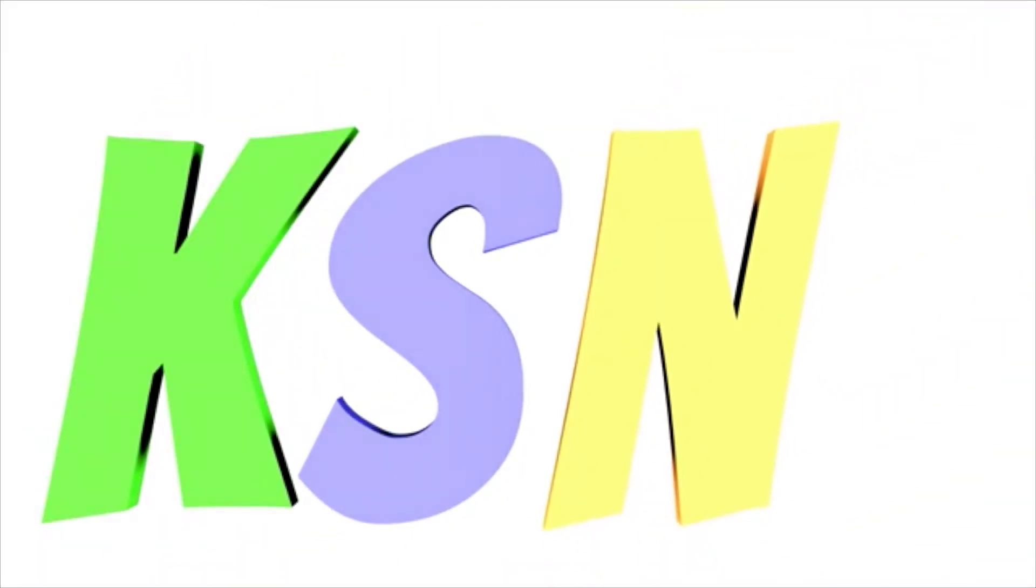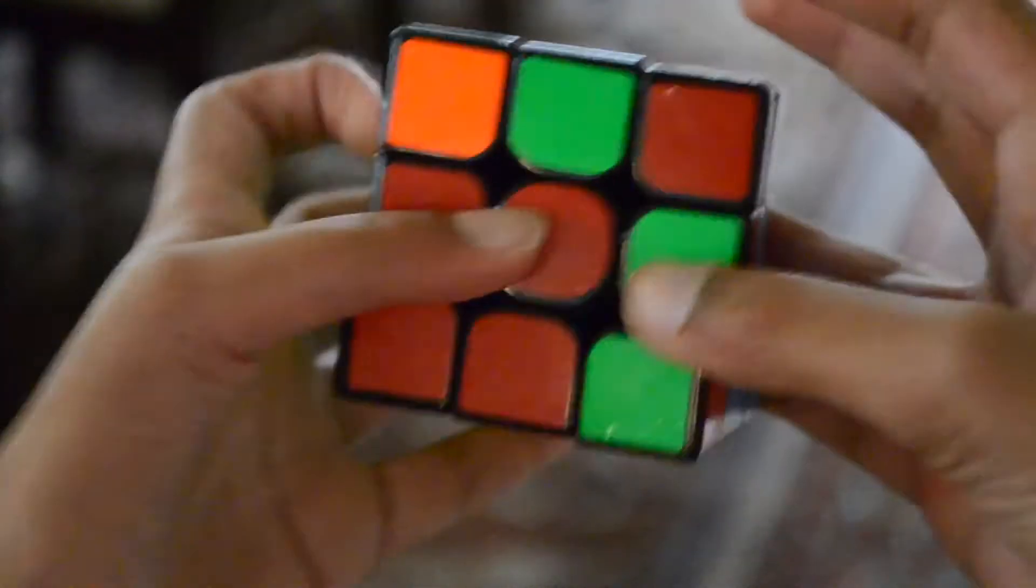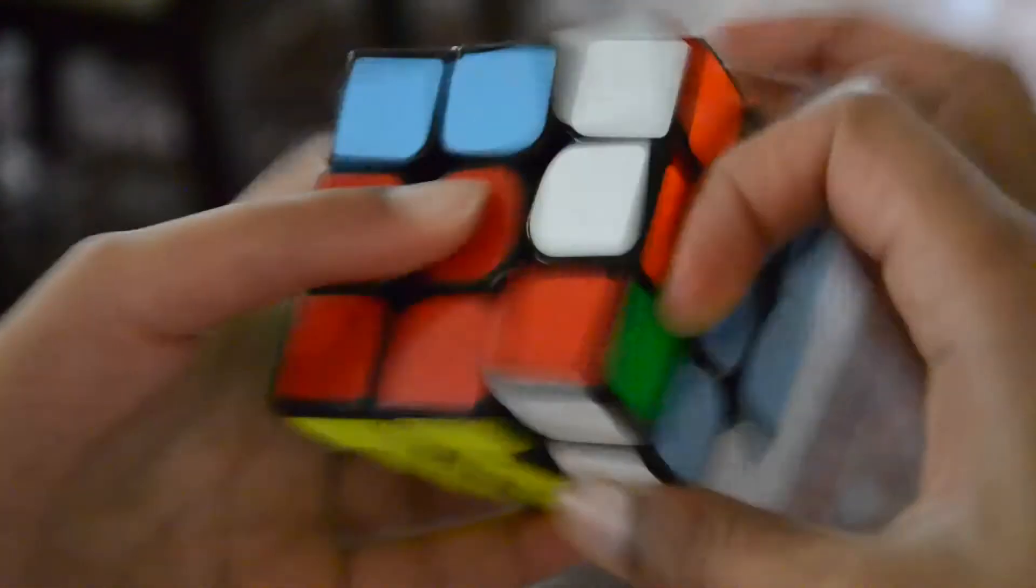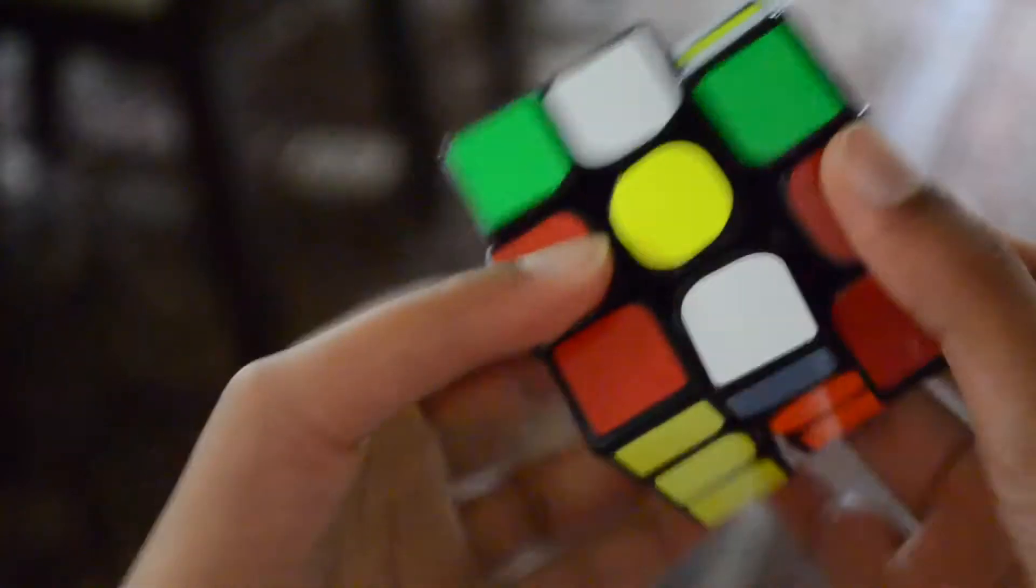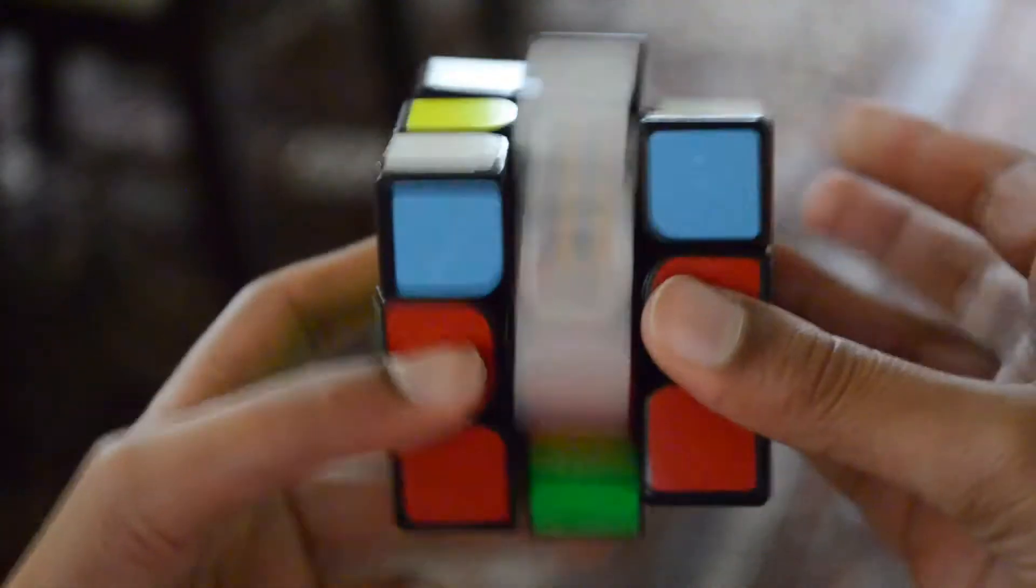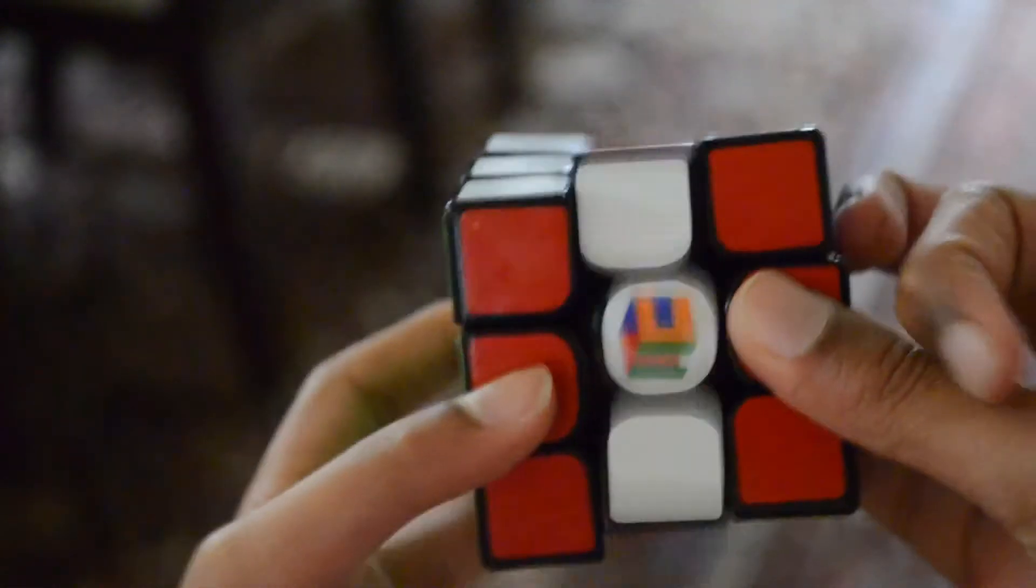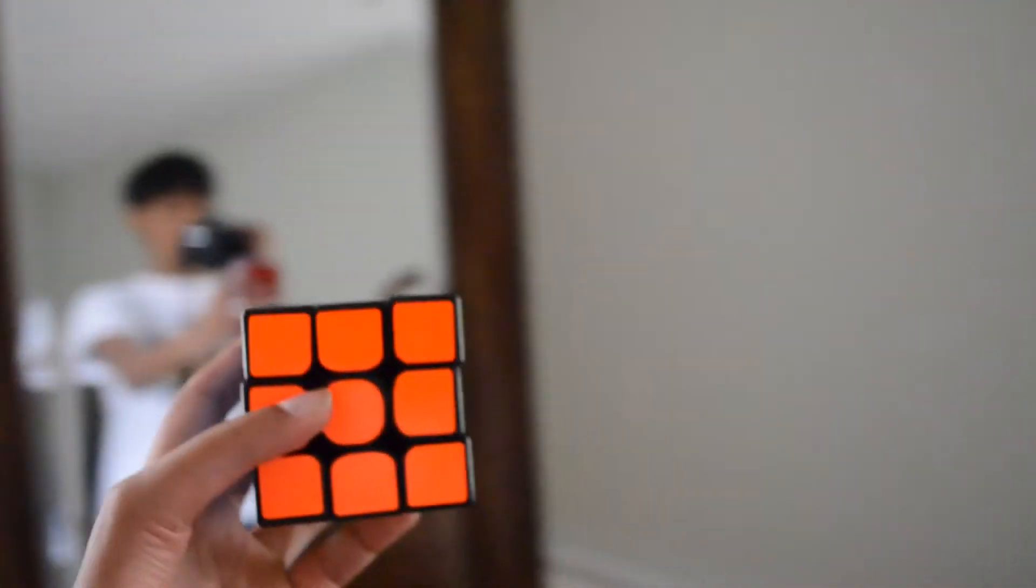However, there's a catch. In order for this cube to reach its full potential, you need to buy maru softsprings from the cubicle. I will link as to where you can buy them in the description, as they will only add about $2 to your purchase.